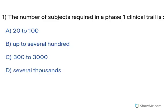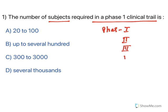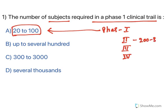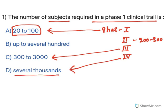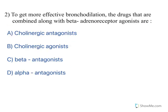The first question: the number of subjects required in a phase 1 clinical trial. Clinical trials have four phases: Phase 1 involves 20–200 human volunteers, Phase 2 around 200–300, Phase 3 around 300–3000, and Phase 4 is post-marketing surveillance done on several thousand subjects. So for phase 1 clinical trials, there are around 20–200 subjects — option A is the correct answer.